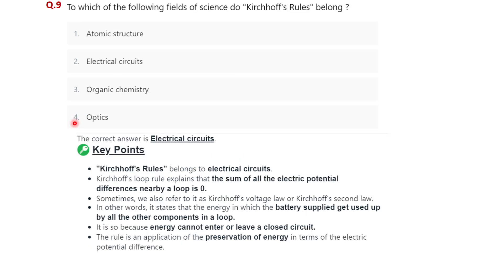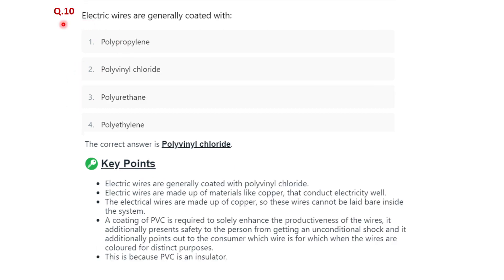Question nine: to which field of science do Kirchhoff's rules belong? Options are: atomic structure, electric circuit, organic chemistry, and optics. The correct option is electric circuit. Kirchhoff's rules belong to the electric circuit and explain that the sum of all electric potential differences around a loop is zero. So option two, electric circuit, is correct.